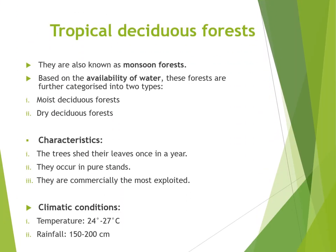The next type is tropical deciduous forest. These forests are also known as monsoon forests and are the most widespread forests in India. Based on the availability of water, these forests are further categorized into two types — moist deciduous forest and dry deciduous forest. The trees shed their leaves once a year, they occur in pure stands, and they are commercially the most exploited. Climatic conditions required are a temperature of around 24 to 27 degrees Celsius and rainfall between 150 to 200 cm per annum.